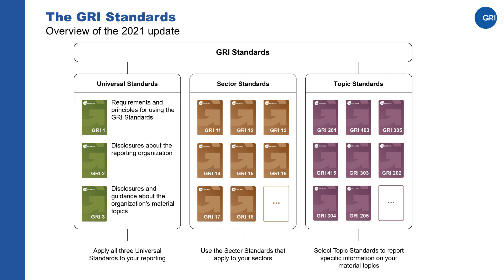The GRI standards now consist of three series of standards: universal standards, sector standards, and topic standards. The standards also have a new look and a new numbering system to identify them. The revised universal standards have a green cover with numbers 1, 2, and 3.